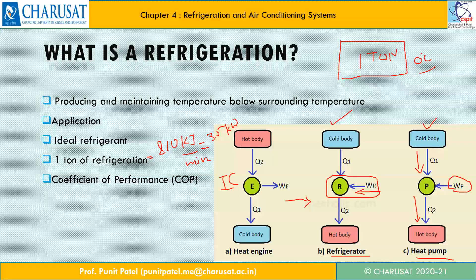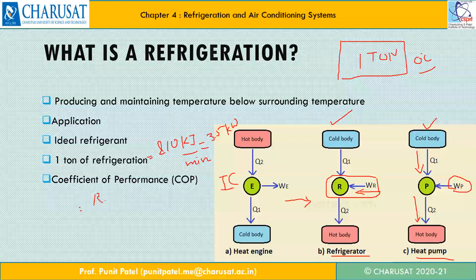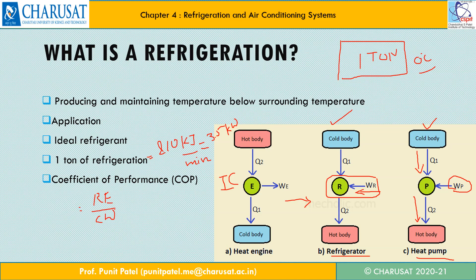The most important part: the coefficient of performance. When we talked about the IC engine, we talked about efficiency. Here, the coefficient of performance is an index to define the effectiveness of the refrigerator or refrigerating effect. The performance of the refrigerator system is expressed by the coefficient of performance, known as COP. The COP of a refrigeration system is defined as the ratio of the refrigerating effect divided by the work required to compress the refrigerant in the compressor. So COP equals refrigerating effect divided by compressor work. The COP is the reciprocal of the efficiency of the heat engine.